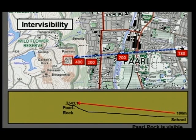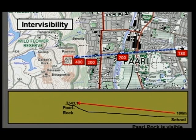Now let's have a look at another example. Here we've got the Nantes Dam. The question is: if you are standing at Nantes Dam, is PAL Rock visible from Nantes Dam? The first thing I must do is get the height of Nantes Dam. Here we can see a contour running there, and the height is 600 — that's a 600-meter contour line. Now, we've got a problem.